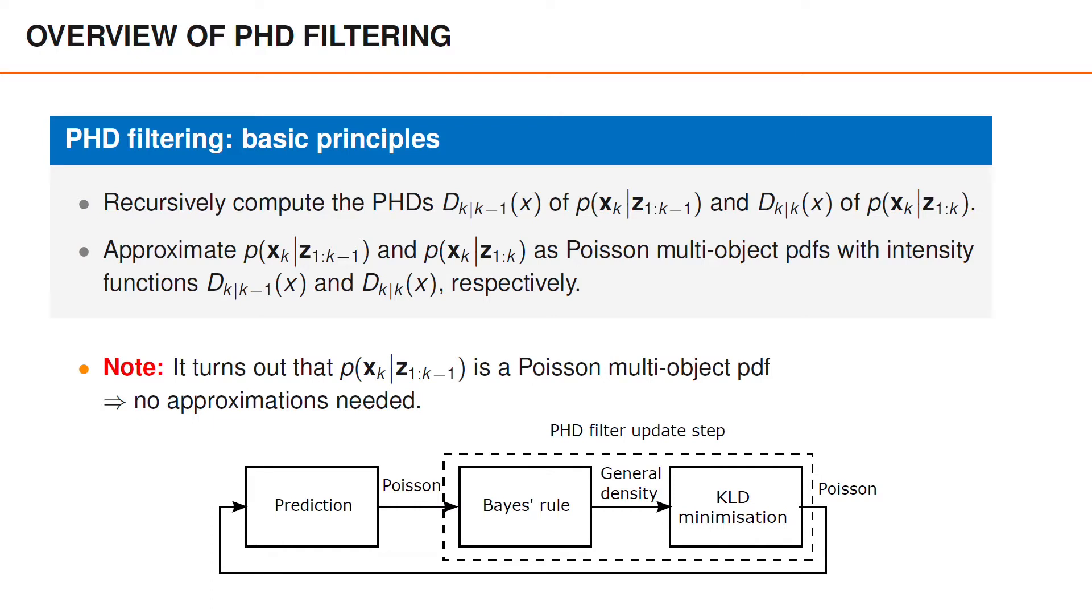We have illustrated the sequence of operations performed during the prediction and update steps in this block diagram. We start and end every recursion with a Poisson point process. After the prediction step, we immediately obtain a Poisson point process. The update step instead consists of two steps, where we first perform the update step using Bayes' rule, and then find the best approximation among all Poisson point processes in the Kullback-Leibler divergence sense. As explained above, to perform the second step, we simply compute the PHD of the posterior distribution, and approximate the posterior as a Poisson point process with that PHD as intensity function.